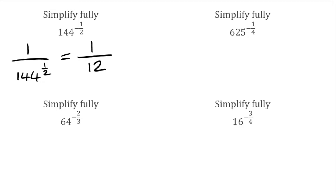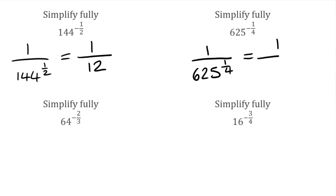For this next one, we've got 625 to the power of negative 1 quarter. Again, we can replace that negative power with 1 over, and then we write 625 to the power of positive 1 quarter. Because we've got that 4 on the bottom this time, we're actually looking for the fourth root of 625. So for this final answer, we'd have 1 over — and the fourth root of 625 is 5 — so the final answer would be 1 fifth.